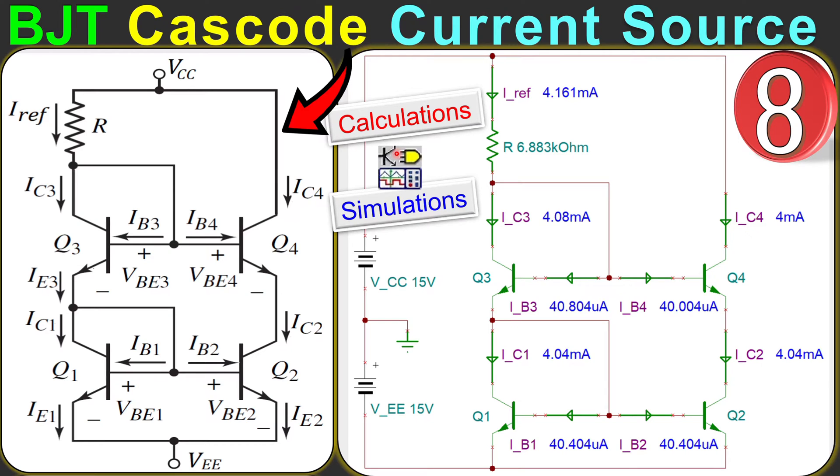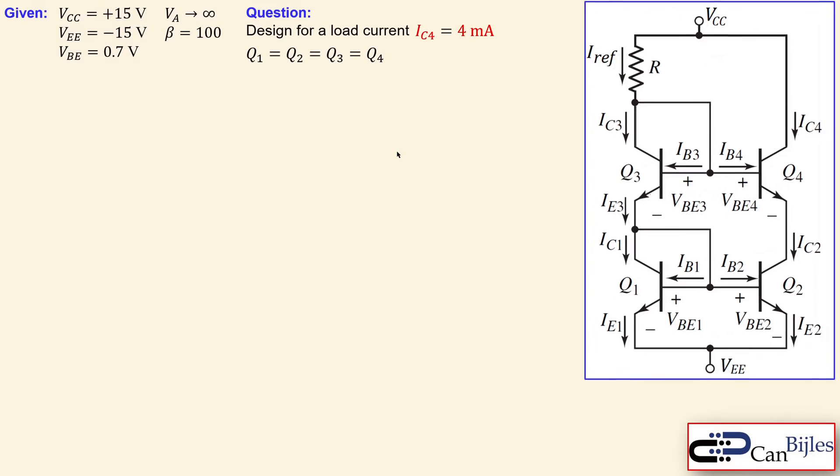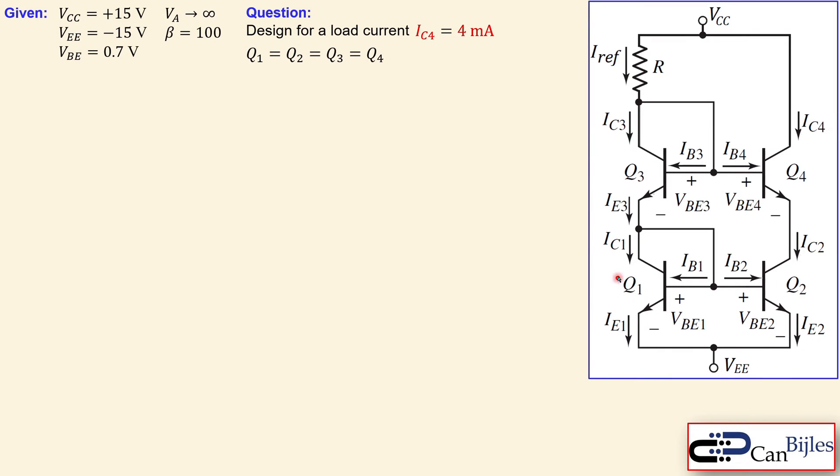Our circuit is given here. You see the simple current mirror configuration using the BJTs Q1 and Q2, and on top of that you see Q3 and Q4 in the exact same configuration. On top of that, this creates the cascode. You can of course create more stages in this format and make more of a cascode configuration.